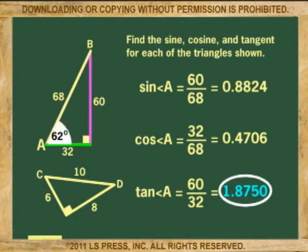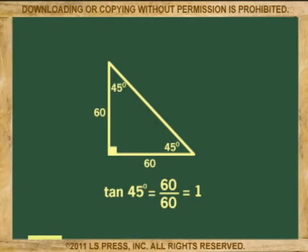And in angles greater than 45 degrees, the opposite side, which is the numerator of the tangent, is greater than the adjacent side, making the tangent for angles greater than 45 degrees a value greater than 1.